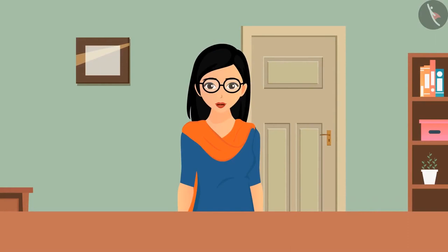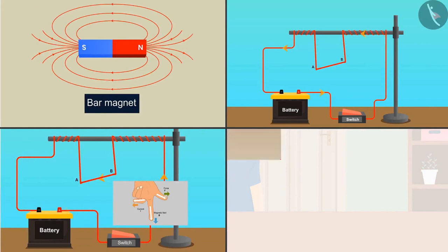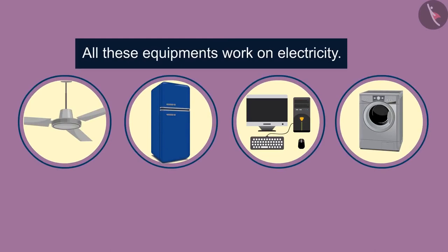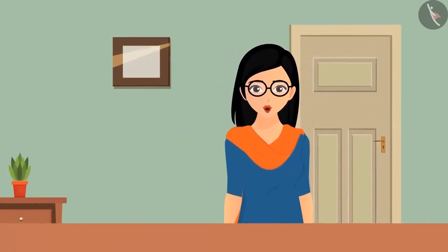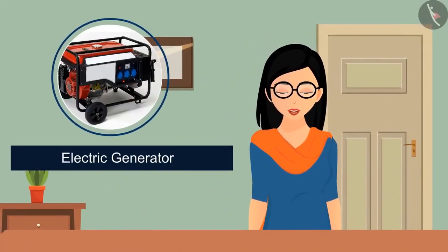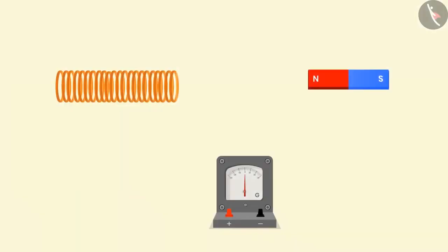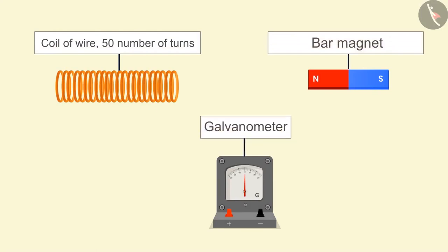In our last video, we understood what happens when a current-carrying conductor is placed in a magnetic field, Fleming's left-hand rule, and the working principle and applications of the electric motor — like fans, refrigerators, computers, and washing machines. All these equipments work on electricity. Have you ever thought about how we generate electricity? Electricity is generated by an electric generator, which works on the principle of electromagnetic induction. To understand electromagnetic induction, let's perform an activity using a coil of wire with 50 turns, a bar magnet, and a galvanometer.